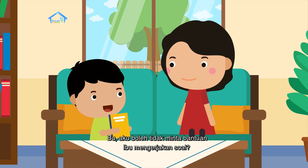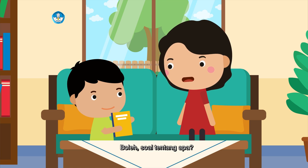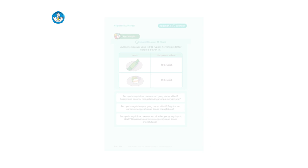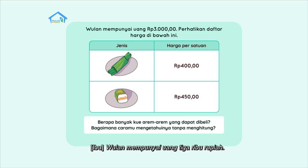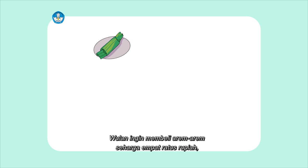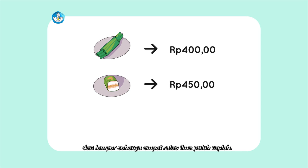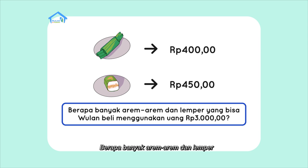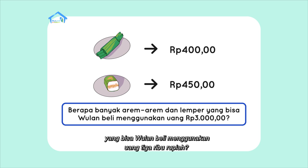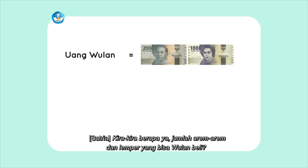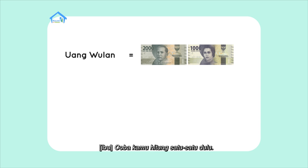Bu, aku boleh tidak minta bantuan ibu mengerjakan soal? Boleh. Soal tentang apa? Tentang menjumlahkan nilai uang, bu. Ulan mempunyai uang Rp3.000. Ulan ingin membeli arem-arem seharga Rp400 dan lemper seharga Rp450. Berapa banyak arem-arem dan lemper yang bisa Ulan beli menggunakan uang Rp3.000? Kira-kira berapa ya jumlah arem-arem dan lemper yang bisa Ulan beli? Coba kamu hitung, satu-satu dulu.